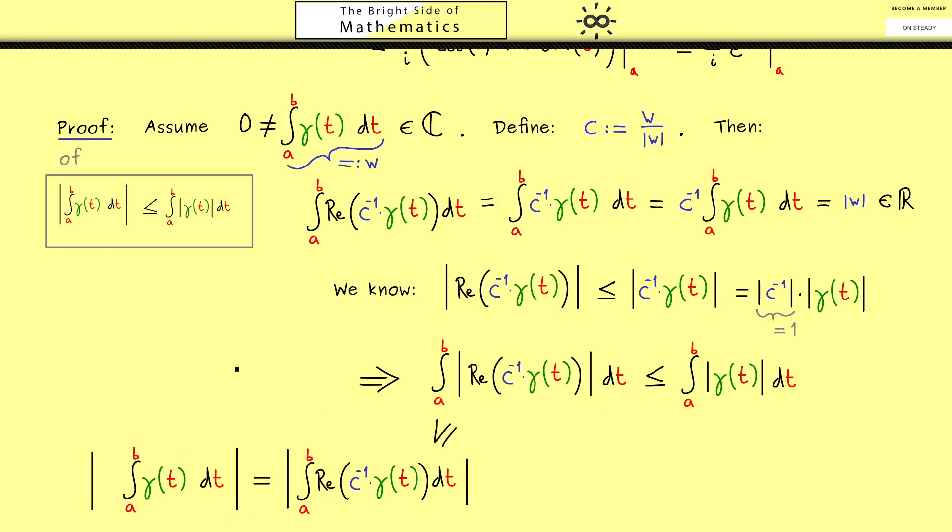Indeed you see the proof was not so hard when you have this nice idea to make the integral real. However it is not important to remember the proof, it is important that you remember this important formula here. Moreover now you also know a lot of properties for this complex integral come immediately from the real counterpart. For example as we have discussed it before the fundamental theorem of calculus but also the substitution rule or the integration by parts formula. Everything is not hard to show at all when you have these properties for the ordinary real Riemann integral.